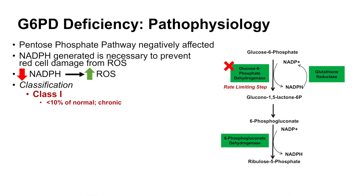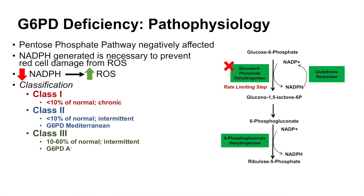Class 1 individuals experience chronic hemolysis. In class 2, individuals also have less than 10% of normal activity, but they only undergo intermittent hemolysis, as opposed to chronic hemolysis in class 1. These class 2 individuals typically carry the Mediterranean allele of glucose-6-phosphate dehydrogenase. Class 3 has about 10% to 60% of normal activity, and these individuals also have intermittent hemolysis; they carry the G6PD-A allele.